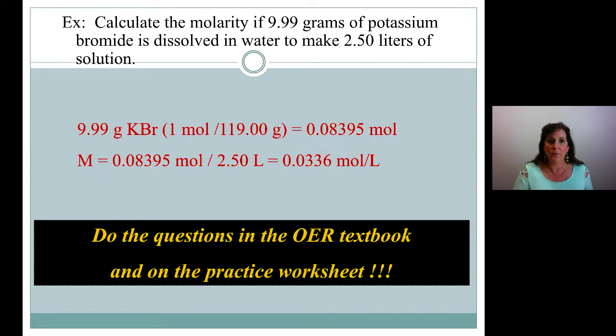So we have 9.99 grams of KBr. 1 mole of KBr added up to be 119.00 grams. Don't forget the .00 because we're adding and we keep our two decimal places. So it really is 119.00 five sig figs.